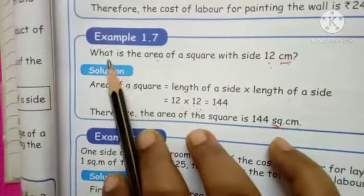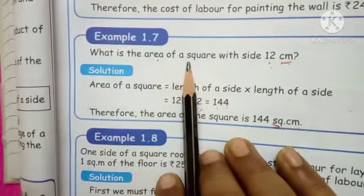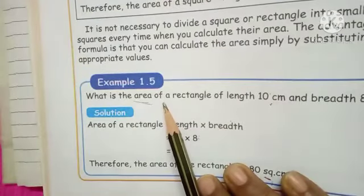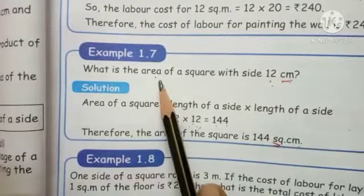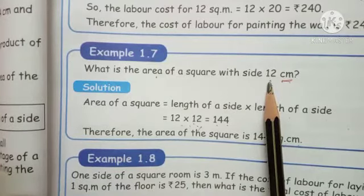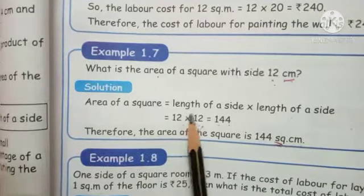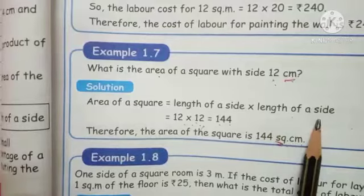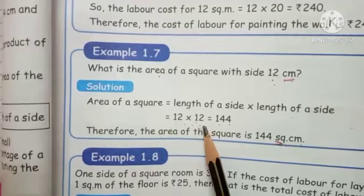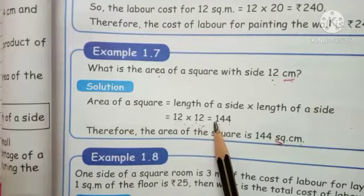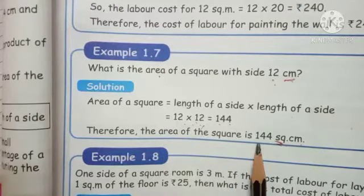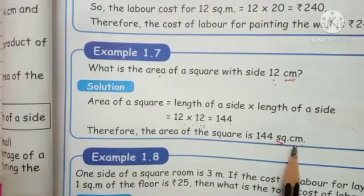Next example sum: what is the area of a square? Here, square is given with only one side value — 12 centimeter. Area of square equals length of side multiplied by length of side. So 12 multiply 12 equals 144. The area of the square equals 144 square centimeter.